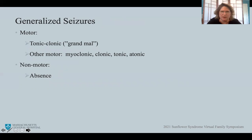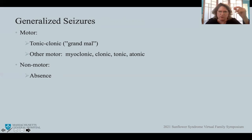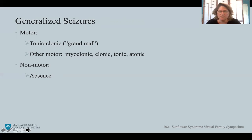Generalized seizures are broken down into motor types, including tonic-clonic — the classic grand mal seizure — characterized by brief stiffening then clonic activity of the extremities with loss of consciousness. Other motor types include myoclonic (quick jerk of the body or extremity), clonic (rhythmic jerking), tonic (stiffening), or atonic (when an individual loses tone and quickly falls). Generalized seizures can also be non-motor, such as absence seizures with brief pauses and eye fluttering.